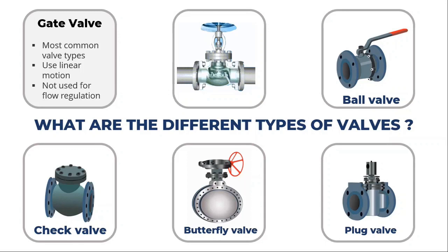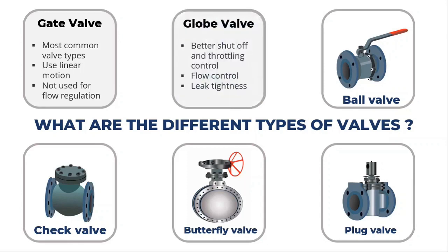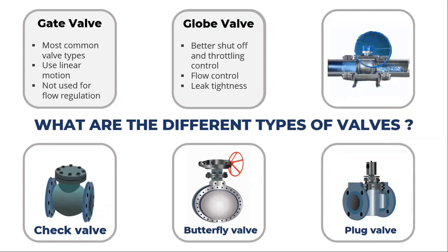A globe valve typically has a spherical body with a stationary ring seat and a moving plug element. The fluid flow is controlled, stopped, and started using a globe valve. Globe valves are employed in systems where leak tightness and flow control are both required. A globe valve offers superior shutoff compared to a gate valve.